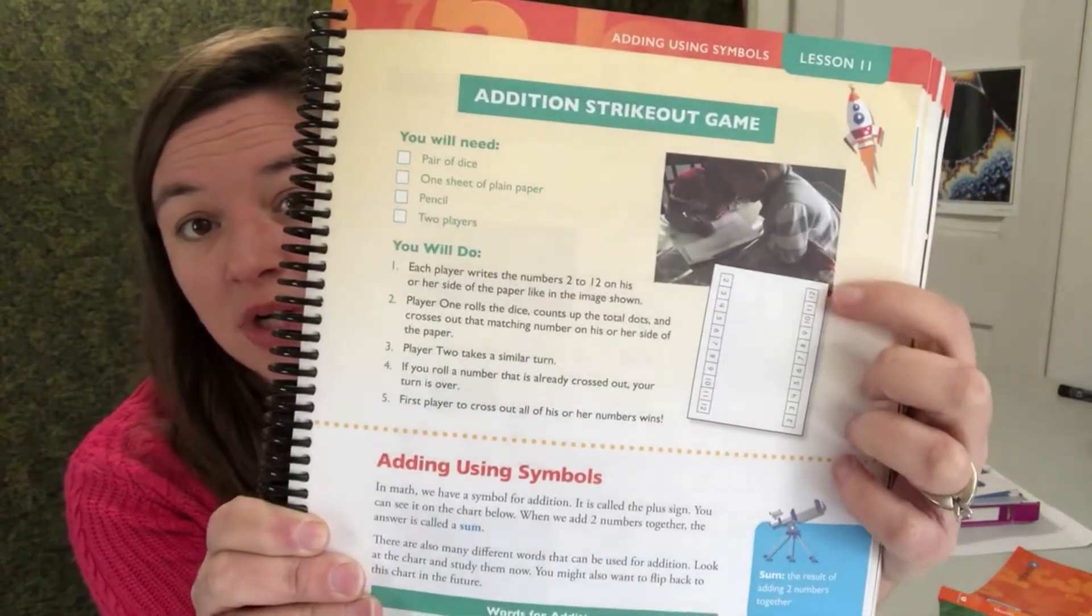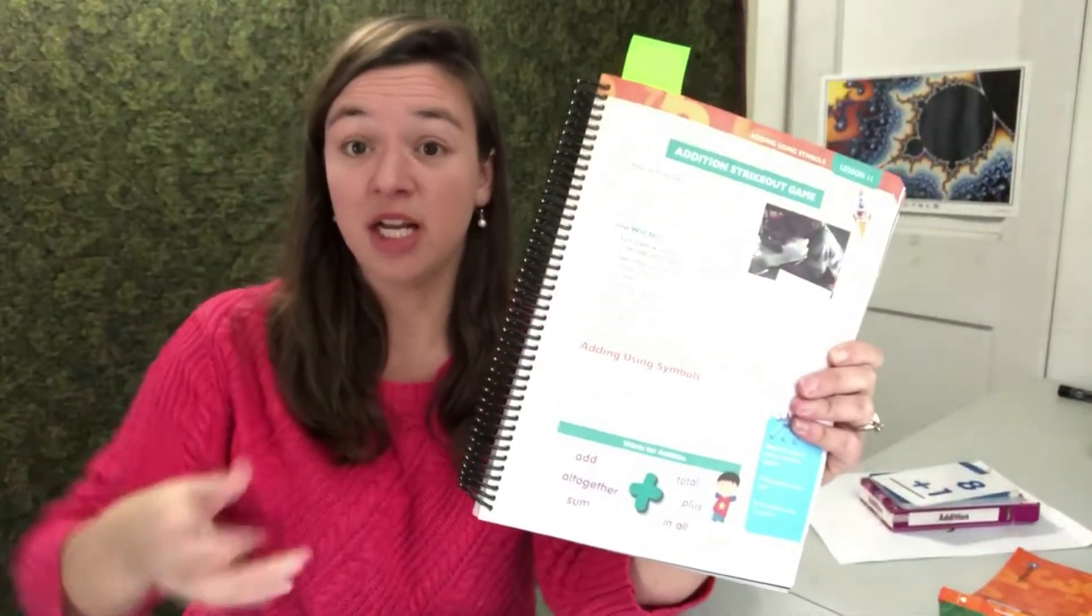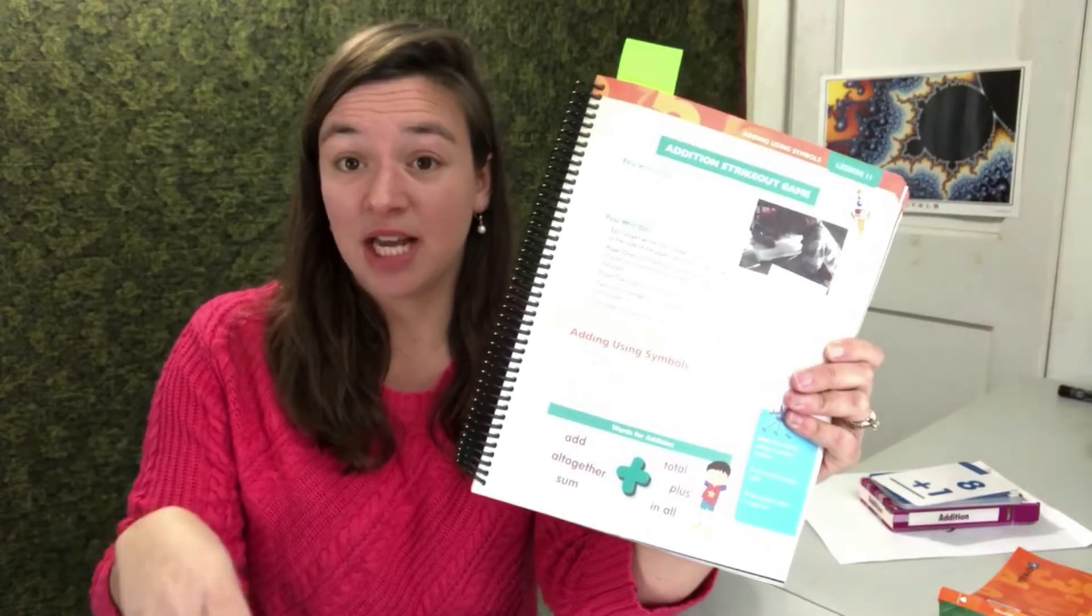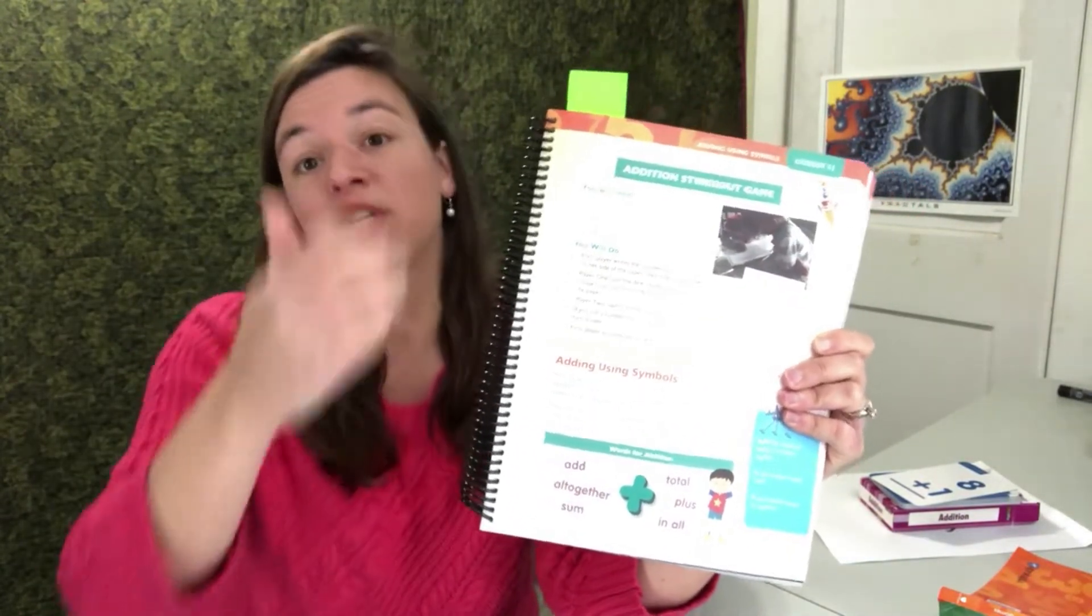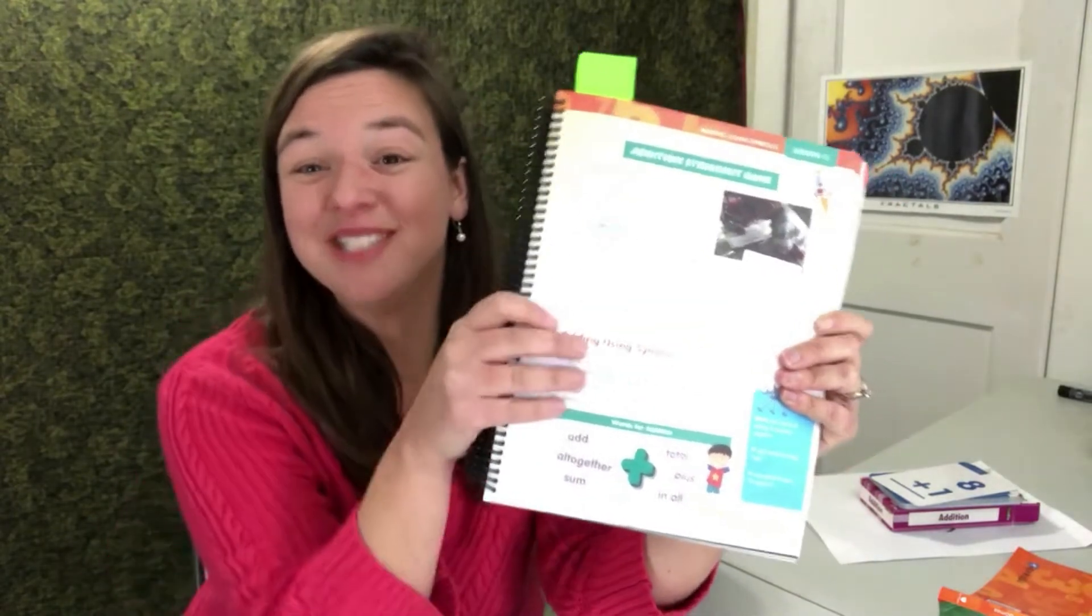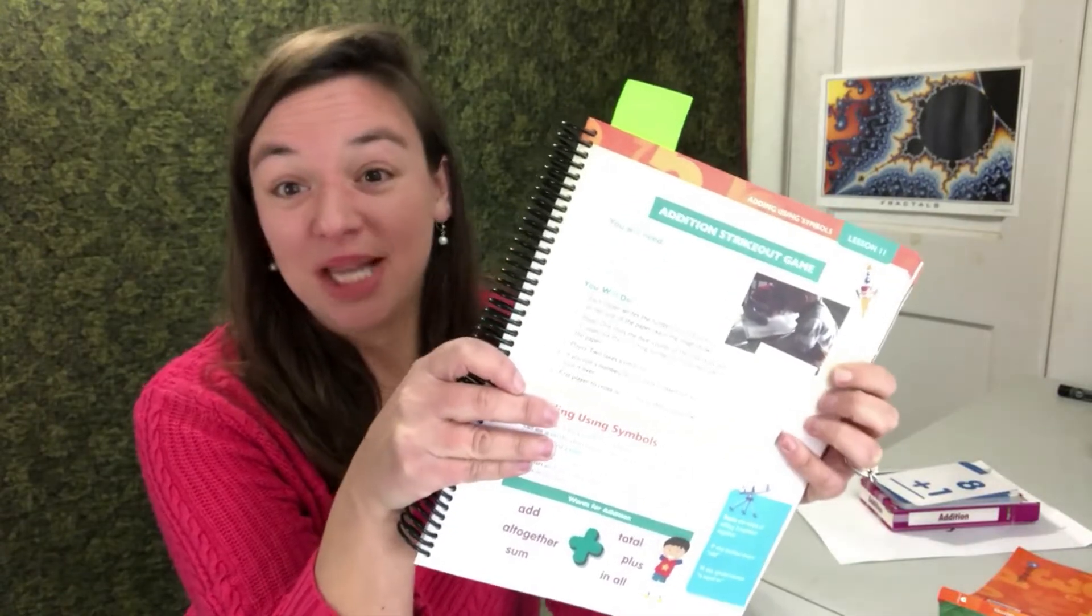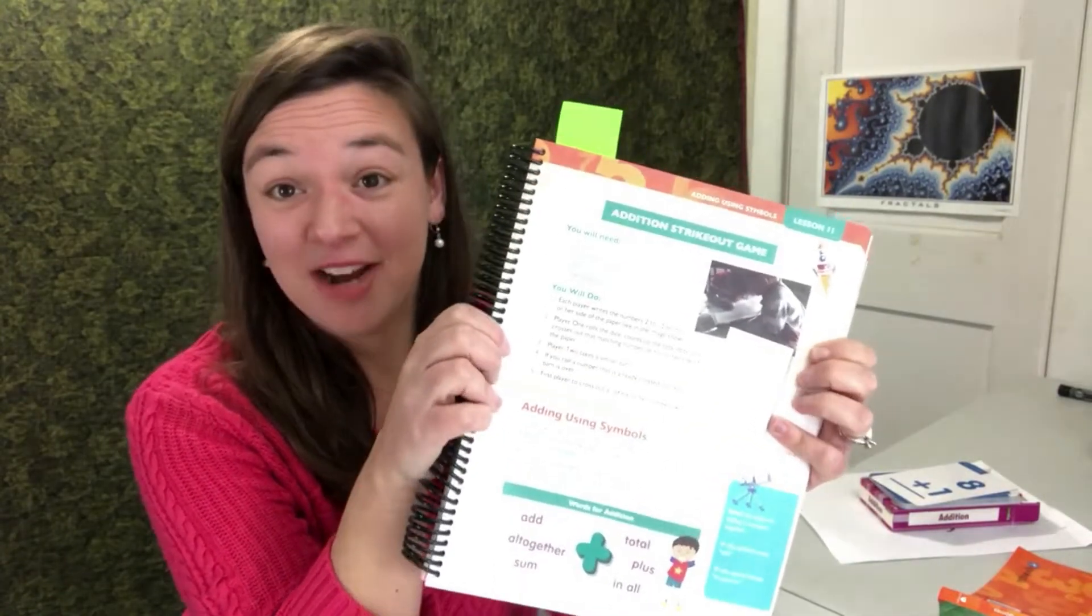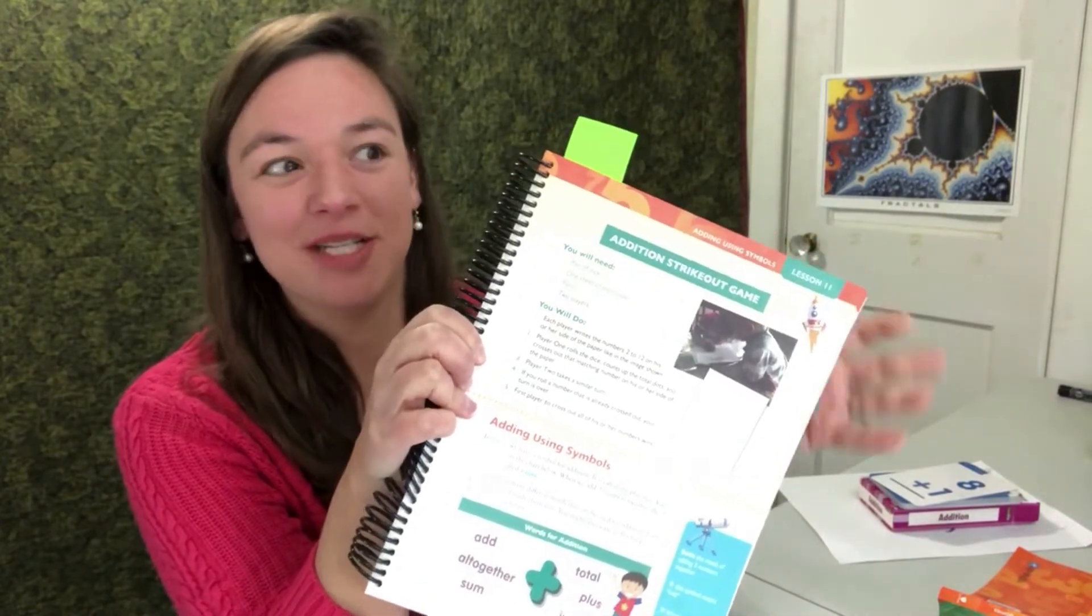You do a game board with the numbers 2 through 12 on each player's side. They roll dice, they add it together, and they cross out the sum on their side. The winner is the first person to get all the sums crossed out on their side. I almost nixed this game from the book because it's so simple, but I played it at a math day at my house. That's where this picture came from, and the kids were so excited and so into it. I'm like, okay, I'm putting it in. But, if your child liked this game during the lesson, you can use it again to review addition facts.